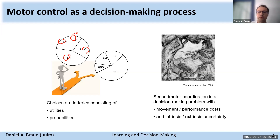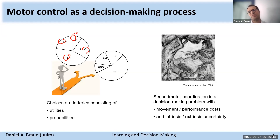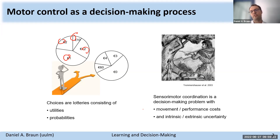We also have uncertainty attached to these trajectories. Unlike the uncertainty in casino roulettes, motor uncertainty can arise both extrinsically — for example, if we follow a randomly moving target — as well as intrinsically from our own body, for example through motor execution noise, like when we throw a dart arrow, or like Wilhelm Tell trying to shoot an apple.